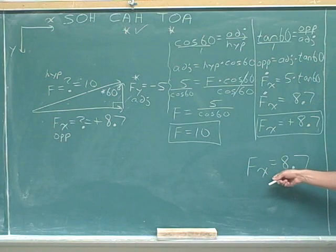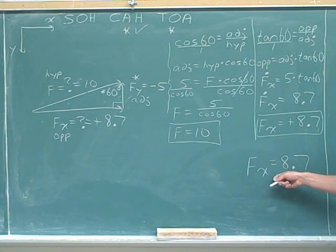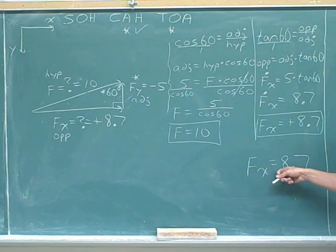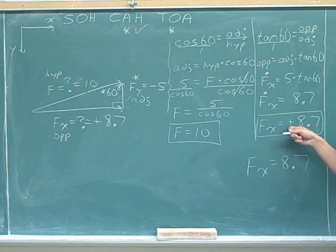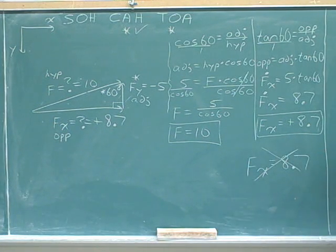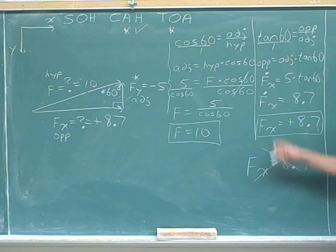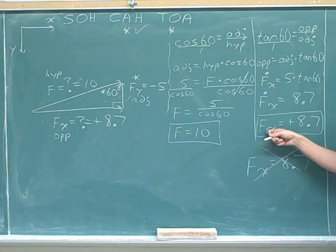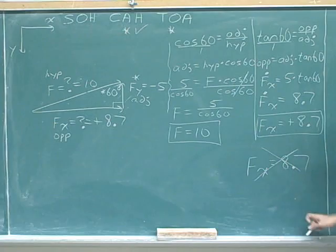If this was your answer, you got the problem wrong. You got the problem wrong because you left out the sign. The x component is not 8.7. It's positive 8.7. So this is wrong. When you're just referring to the magnitude, you can say that that's just 8.7. But you're not done until you've given the signed component, which includes the positive sign.